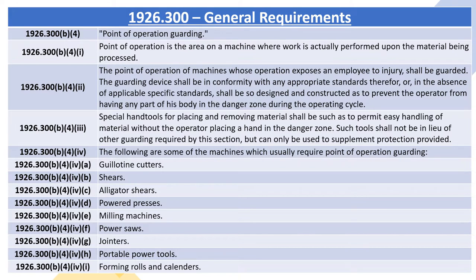1926.300(b)(4)(i): Point of operation is the area on a machine where work is actually performed upon the material being processed. 1926.300(b)(4)(ii): The point of operation of machines whose operation exposes an employee to injury shall be guarded. The guarding device shall be in conformity with any appropriate standards, or in the absence of applicable specific standards, shall be so designed and constructed as to prevent the operator from having any part of his body in the danger zone during the operating cycle.